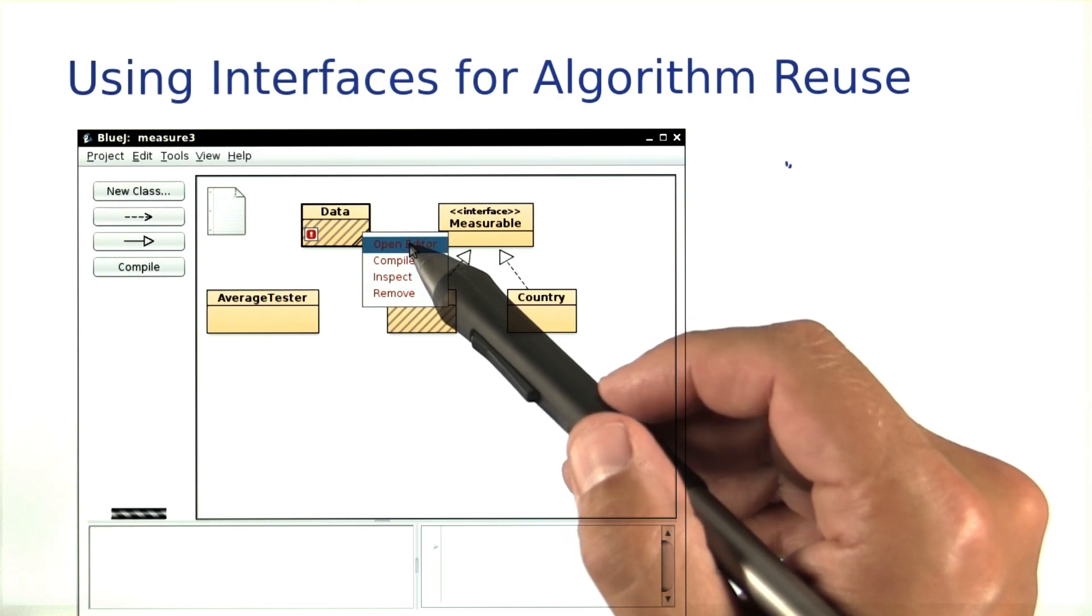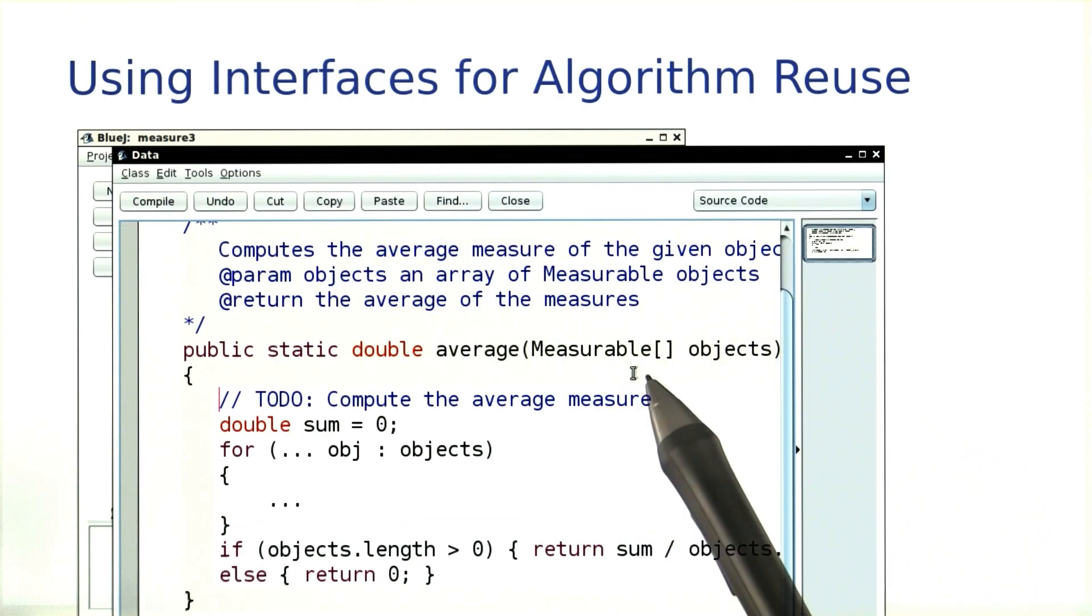Now we can implement a single method in the data class that will take an array of measurable objects and it will compute the average measure. That's for you to complete.